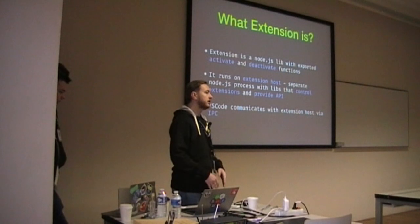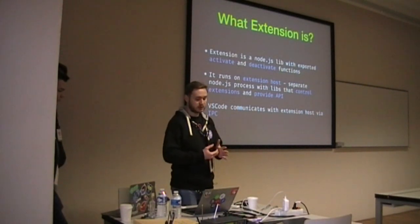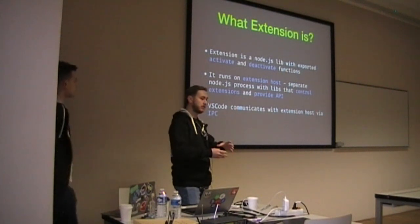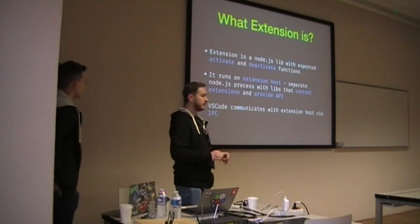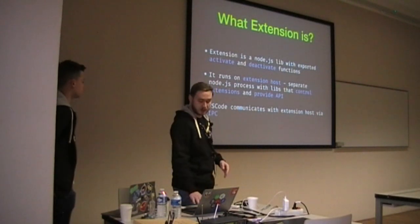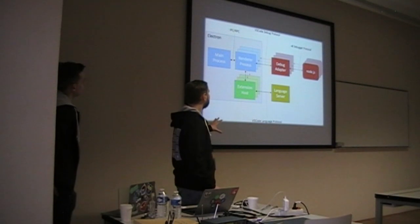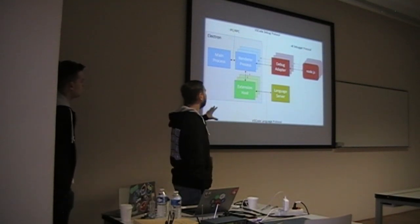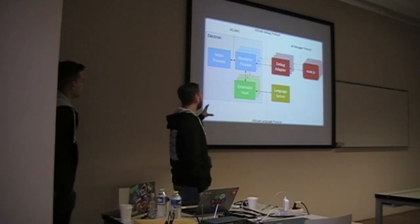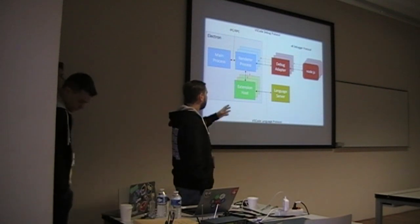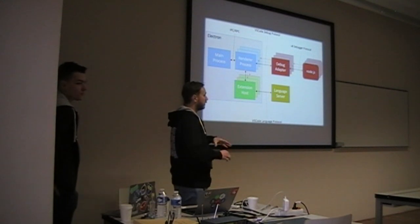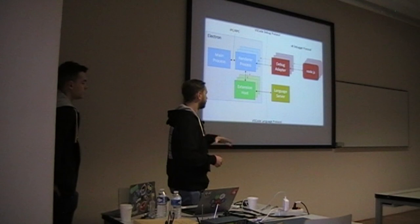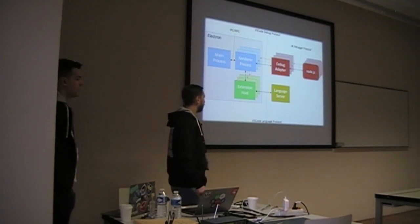What is an extension? An extension is just a Node.js library. It runs on the extension host, which is just another Node.js process. It communicates with the main renderer process of Visual Studio Code using IPC. So in general, you have Electron with a main process and a renderer process, and a bunch of extensions running in different processes. It also has debugger protocols and language server protocols, with those processes usually located in separate processes.